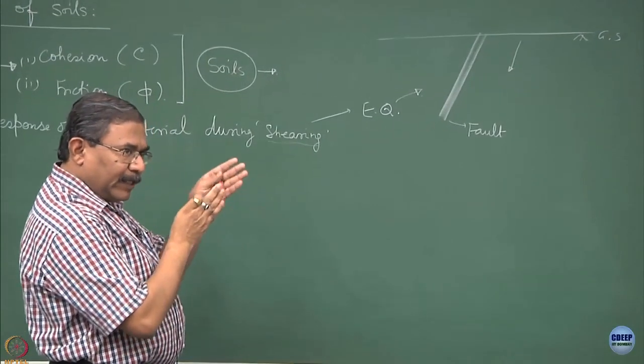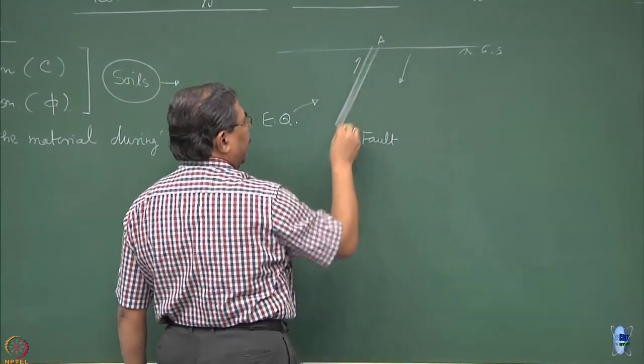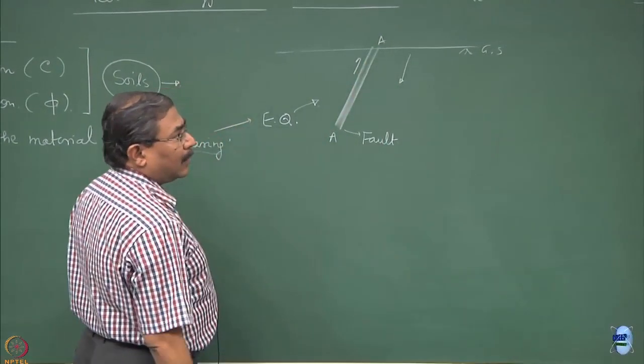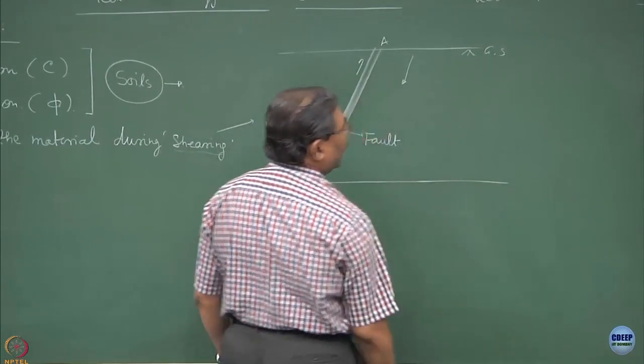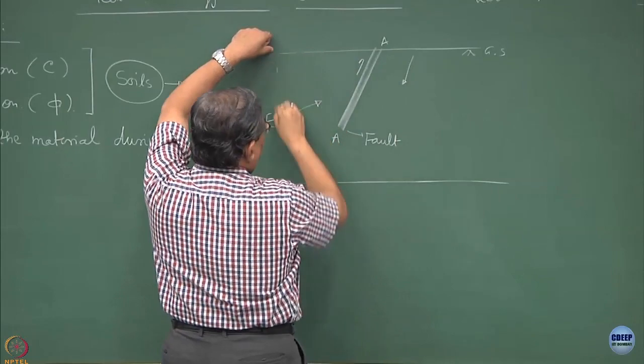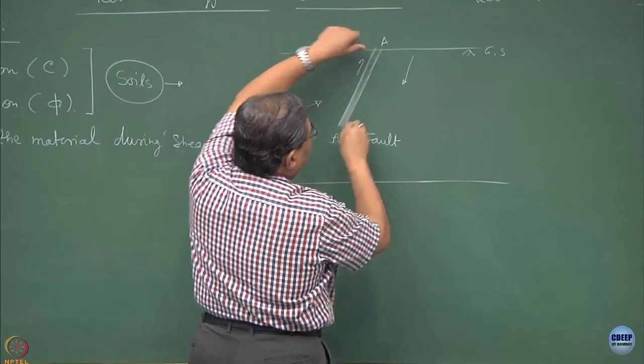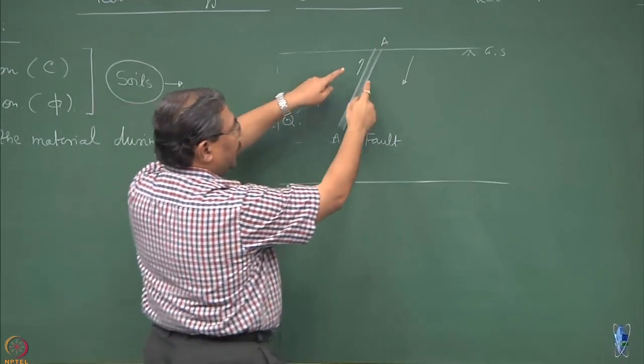And hence what we have done, we have created a situation where there is relative motion along this plane AA. Initially the whole body was like this of the soil mass, and then there is a relative motion of this block with respect to this block along this plane. So this becomes the plane of shearing.